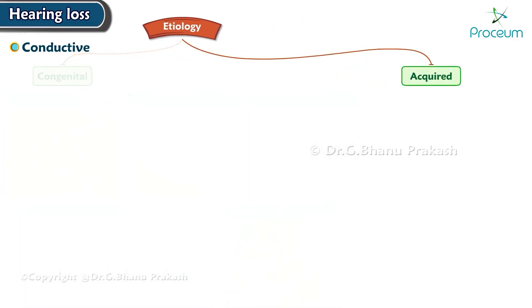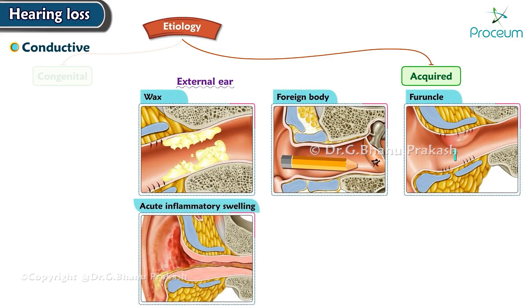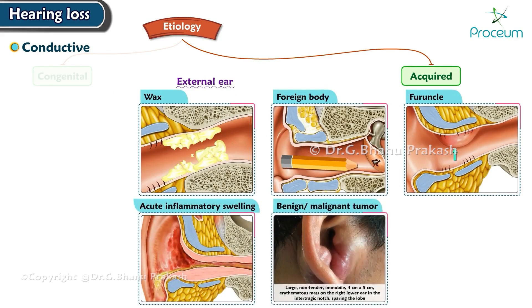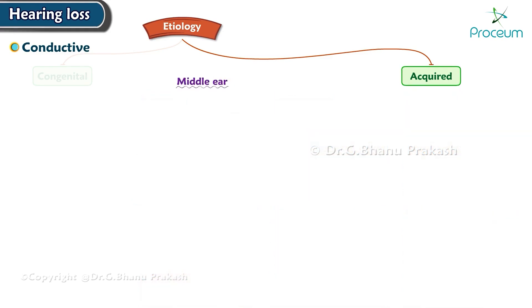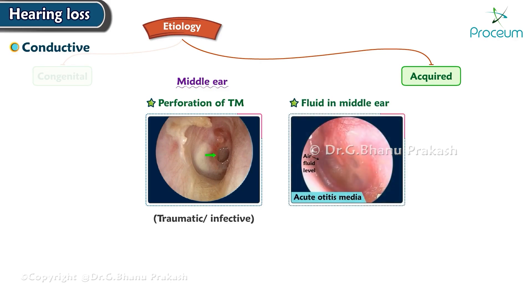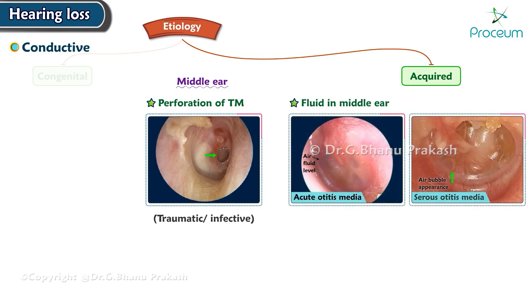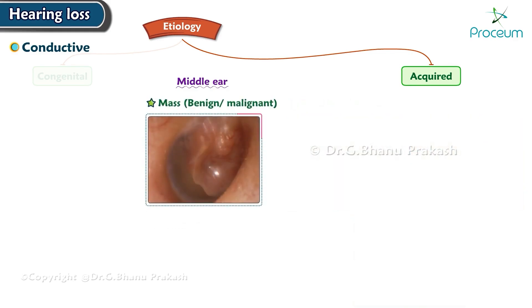Acquired causes affecting the external ear include any obstruction in the ear canal such as wax, foreign body, furuncle, acute inflammatory swelling, benign or malignant tumor, or atresia of the canal. Middle ear causes include perforation of the tympanic membrane — traumatic or infective — and fluid in the middle ear in conditions like acute otitis media, serous otitis media, or hemotympanum.